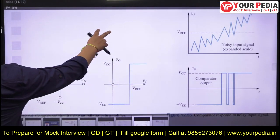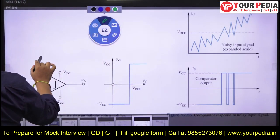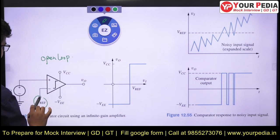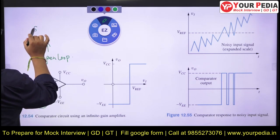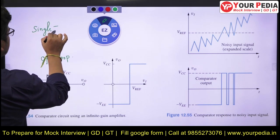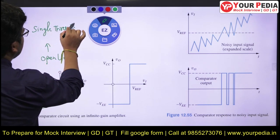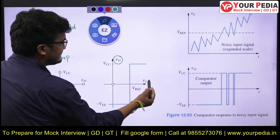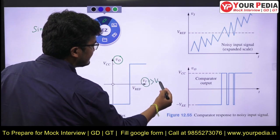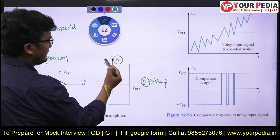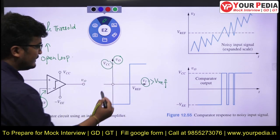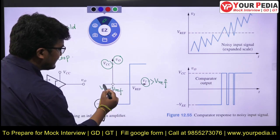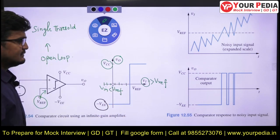Consider this diagram. You can see here this is our open loop op-amp having a reference input at the inverting terminal. This is basically a single threshold comparison. The output versus input characteristics shows: when the input is greater than V-reference or the threshold value, then output will be plus V-sat or plus VCC. If input is less than V-reference or threshold, then output is going to be minus VEE. This is the transfer characteristics.